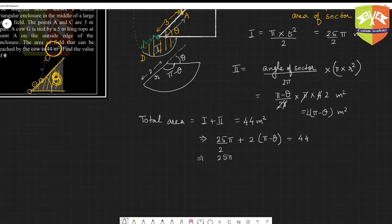25π plus 4(π minus theta) is equal to 88. If you simplify, this is nothing but 29π minus 4 theta is equal to 88.